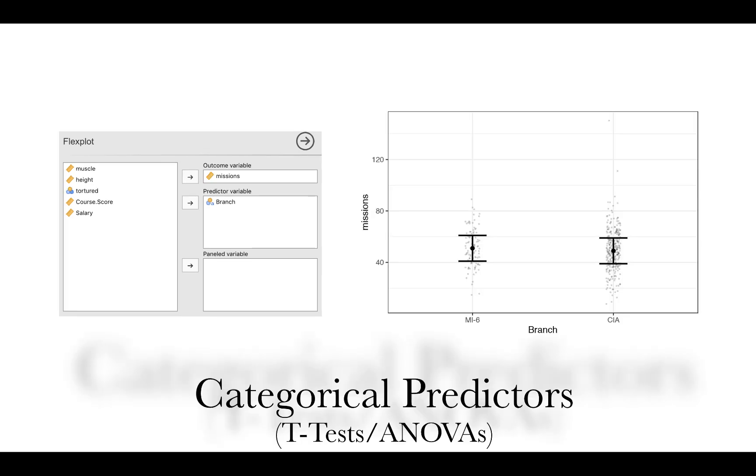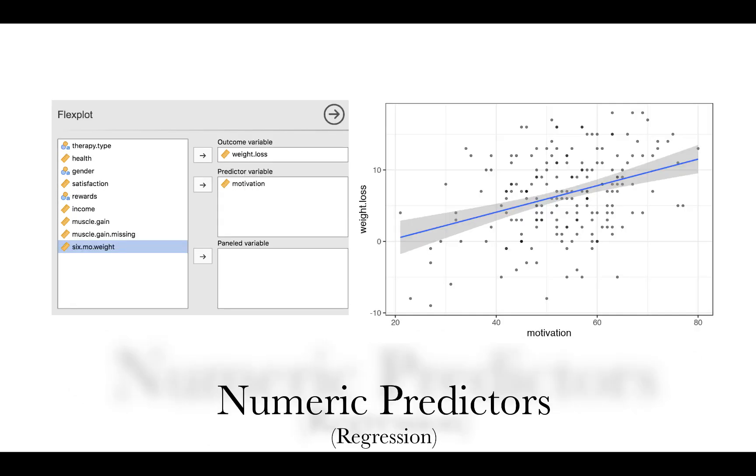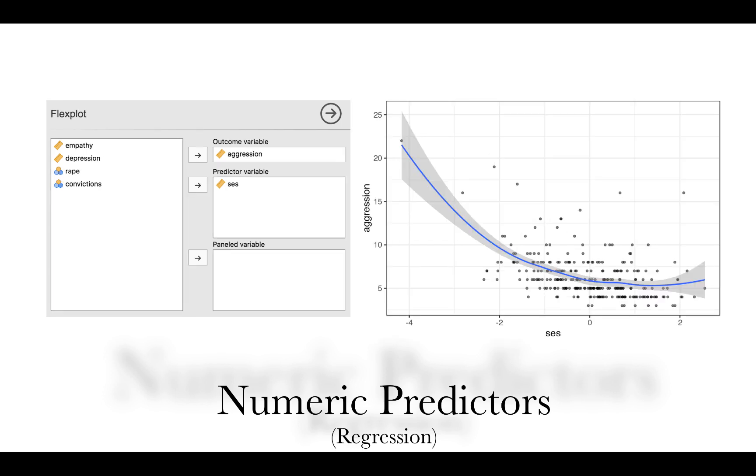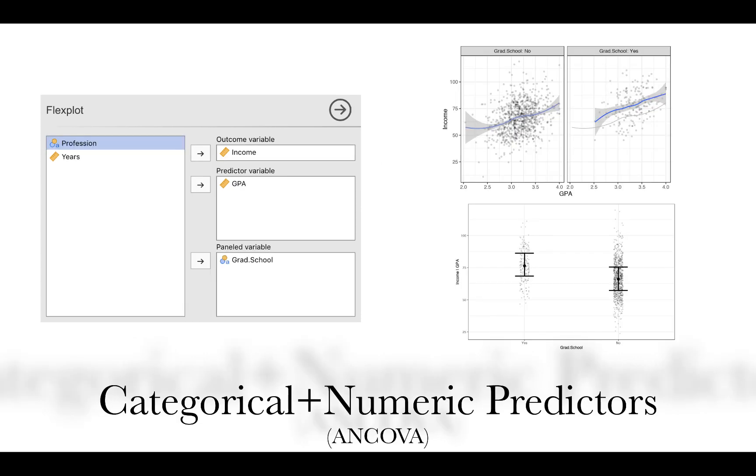And then here we are supplying it with a categorical predictor variable, like with a t-test or an ANOVA, and it knew to do what I call here a median dot plot, where the raw data are displayed. Or let's say you specify a numeric predictor, motivation in this case. Flexplot is smart enough to know that I should be doing a scatter plot here. But Flexplot also has the flexibility to do nonlinear relationships. In this case, this was a lowest line.